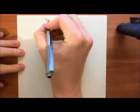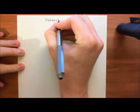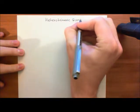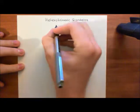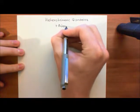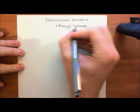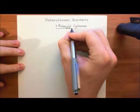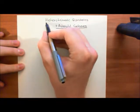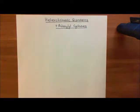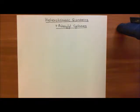The topic for this video is heterotrimeric G-proteins and adenylyl cyclases. We'll start off with the structure of adenylyl cyclases, then talk about the classification of adenylyl cyclases — there are nine different ones classified into four different groups — and then we'll talk about the activation of adenylyl cyclases and the reaction that they catalyze.